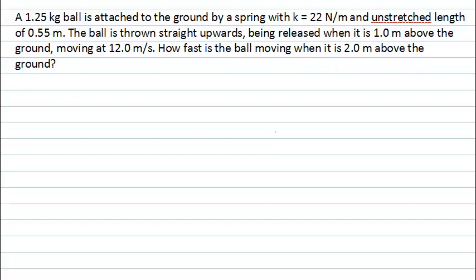Now that you've read the question, let's identify what's being asked. The last sentence asks how fast the object is going at a particular location. The question also provides a lot of information: it tells us the mass of the object, there's a spring with certain properties such as its spring constant and natural length, and it tells us some initial conditions — where the ball begins and how fast it's moving.